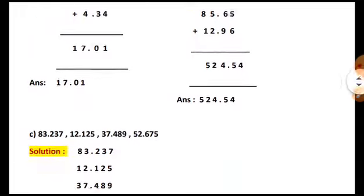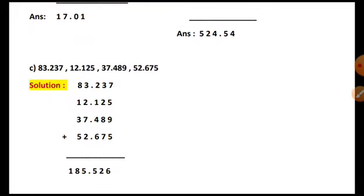Now the next one — here we have to add four decimal numbers. Children, the method will remain the same whether it is four decimal numbers, five decimal numbers, or any number of decimal numbers you are given to add. The process is going to remain the same. All the numbers are written in such a way that you keep the decimal point one below the other in a single alignment, and after that do the addition as you add whole numbers.